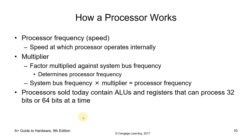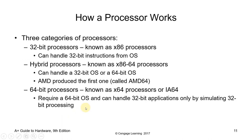Processors sold today contain ALUs and registers that can process 32 bits or 64 bits at a time — we call these hybrid processors, also known as x86-64 processors. There are three categories: hybrid processors (x86-64) can handle a 32-bit or 64-bit OS — AMD produced the first one called AMD64. The 32-bit processors, also known as x86 processors, can handle 32-bit instructions from the OS.